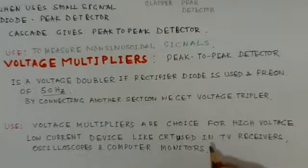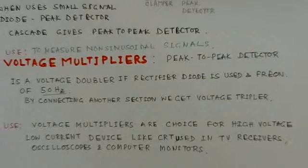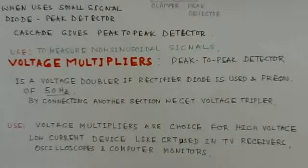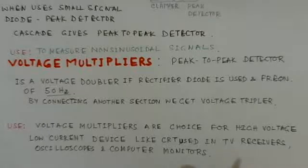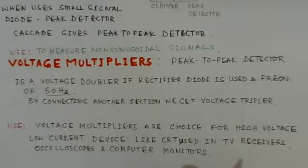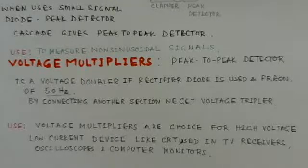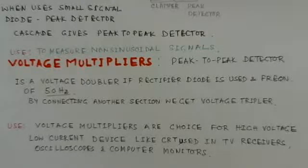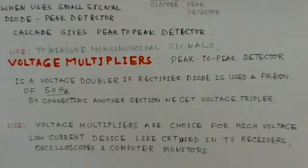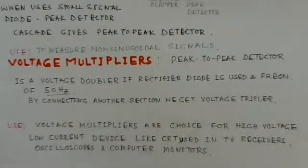One could use transformers as well to give high voltages, but transformers are very bulky and transformers with very high transformation ratios really give a very bulky transformer. So one could use few stages of multipliers and after multipliers one could use maybe a transformer to get a high voltage with low current requirements.